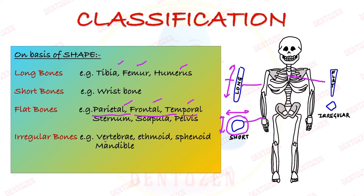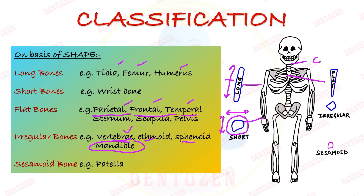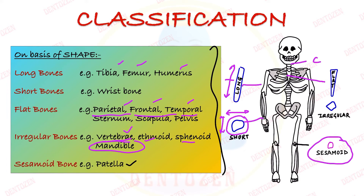Irregular bones have complex shapes, like vertebrae, ethmoid, sphenoid, and the mandible — the mandible is also a complex, irregular bone. Then we have sesamoid bones, which form inside the tendons — for example, the patella or kneecap.